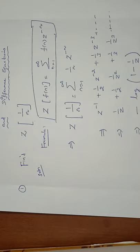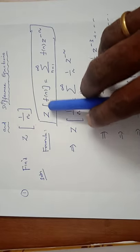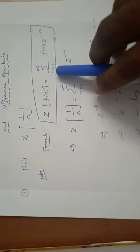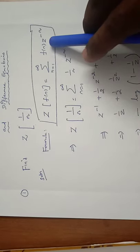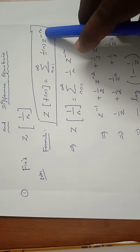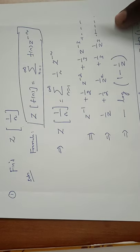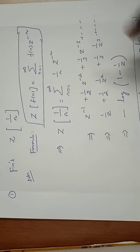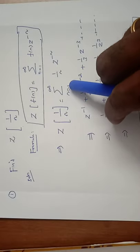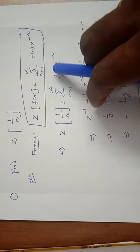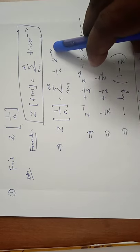Find the Z-transform of 1/n. First we have to apply the definition: Z-transform of f(n) equals sigma from n=1 to infinity of f(n) into z to the power minus n. So Z{1/n} equals sigma from n=1 to infinity of (1/n) into z to the power minus n.